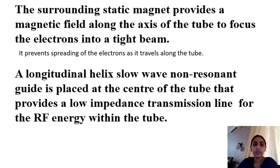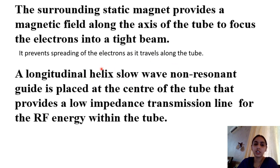The electron beam focusing magnet is placed along the tube. This surrounding static magnet prevents the spreading of electrons as they travel along the tube, focusing them into a tight beam. The helix slow wave structure is placed at the center of the tube to provide a low impedance transmission line for RF energy within the tube, ensuring maximum interaction of the electron beam with the RF energy.